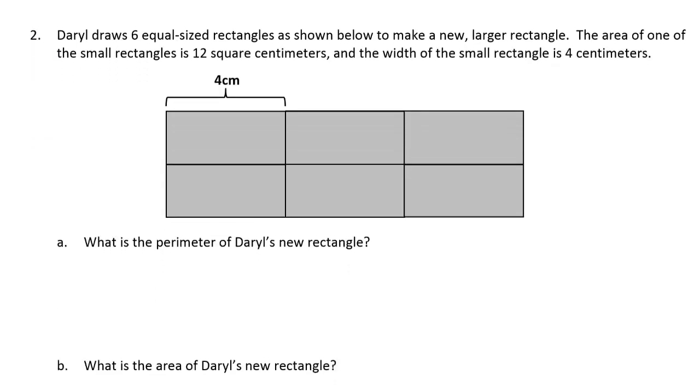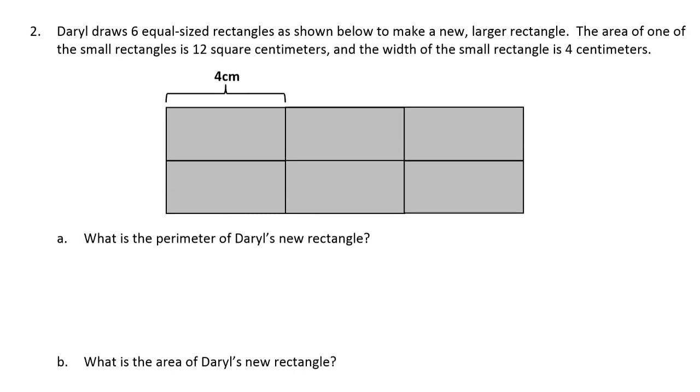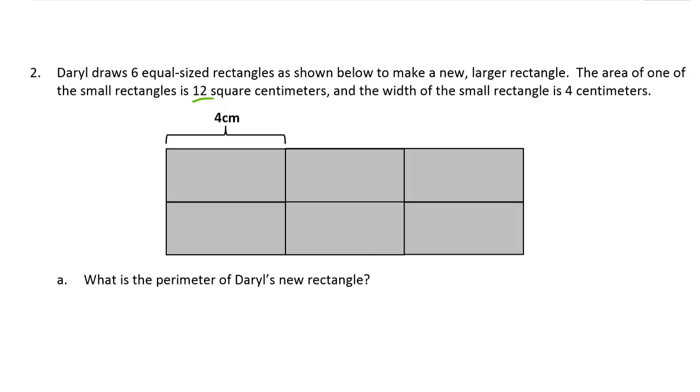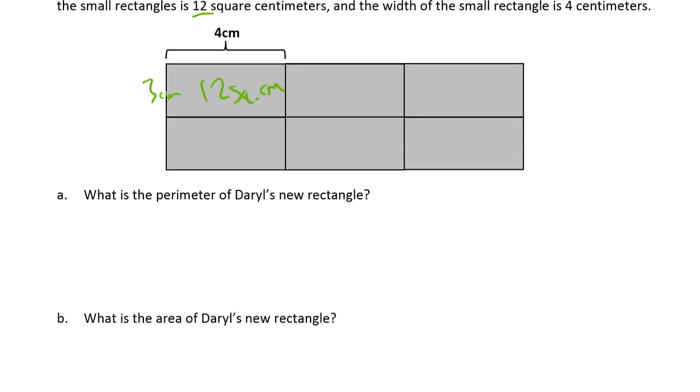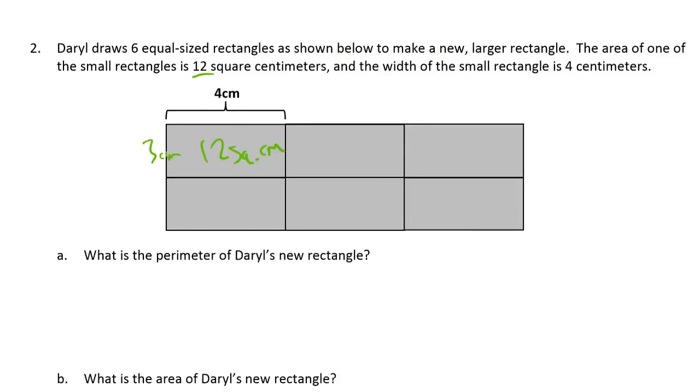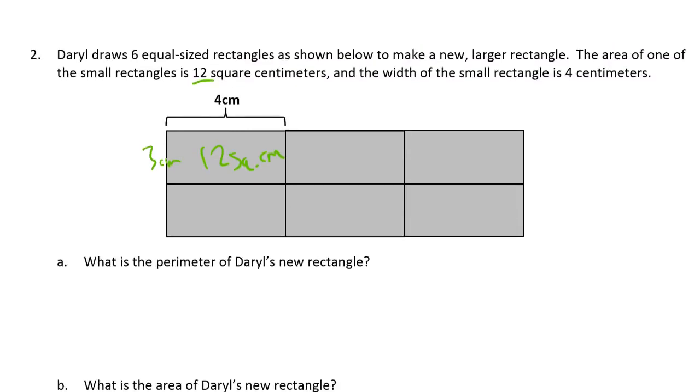And this is the next page. Daryl draws six equal-sized rectangles, as shown below, to make a new larger rectangle. The area of one of the small rectangles is twelve square centimeters. And the width of the small rectangle is four centimeters. So if the area is twelve square centimeters, then, and this is four, then we have to think twelve divided by four is three. So the sides are three. Just the first thing I'm thinking of, looking at the picture before I even read the question.